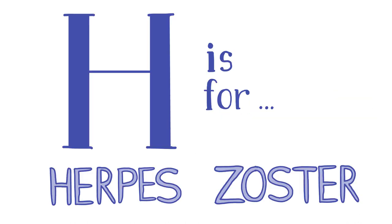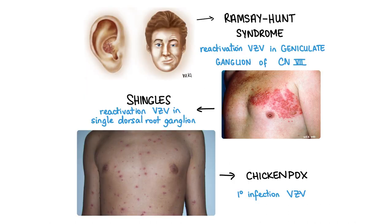H is for herpes zoster infection, also known as shingles. Shingles is an acute unilateral painful blistering rash caused by reactivation of the varicella zoster virus. If the varicella zoster virus reactivates in the geniculate ganglion of the seventh cranial nerve causing the rash to occur around the ear, this is referred to as Ramsay Hunt syndrome or herpes zoster oticus. Infection with varicella normally occurs in childhood producing vesicles — this is known as chicken pox. After primary infection, the virus persists in the dorsal root ganglia of the CNS, and reactivation takes place after many years as a result of immunosuppression, leading to infection in the dermatome served by the infected ganglia.